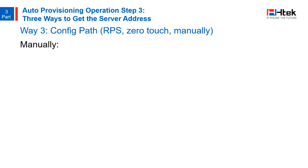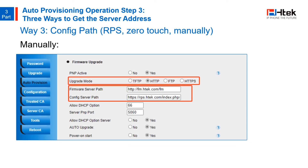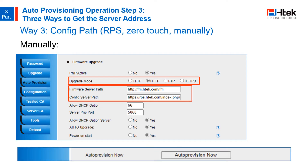Manually, it is to manually conduct a one-time auto-provision. To do it, log on to the phone's webpage, go to Management, then Auto-Provision, write the server address in the Config Server Path field, and click Auto-Provision Now. Provisioning will be conducted immediately.